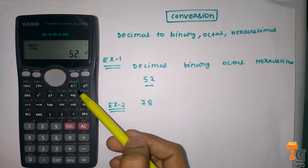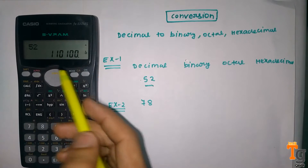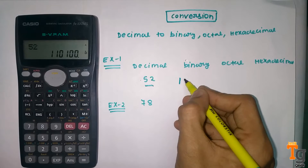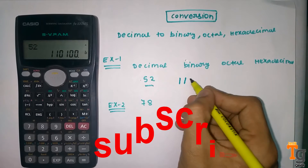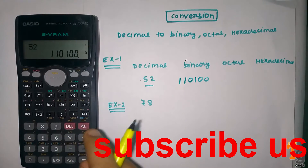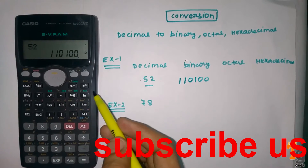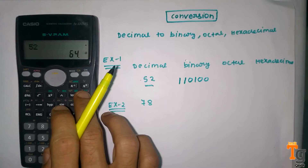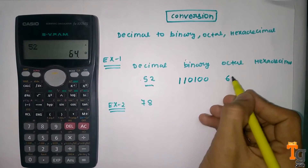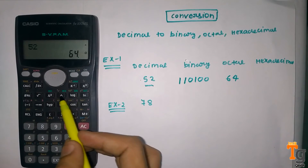Here you can see the number is displayed. For converting to binary form, here you can see binary, so you will simply press this button and your answer is here. The answer is 1 1 0 1 0 0. If you want to convert to octal form, you simply press octal here and you will find the octal number, which is 64.